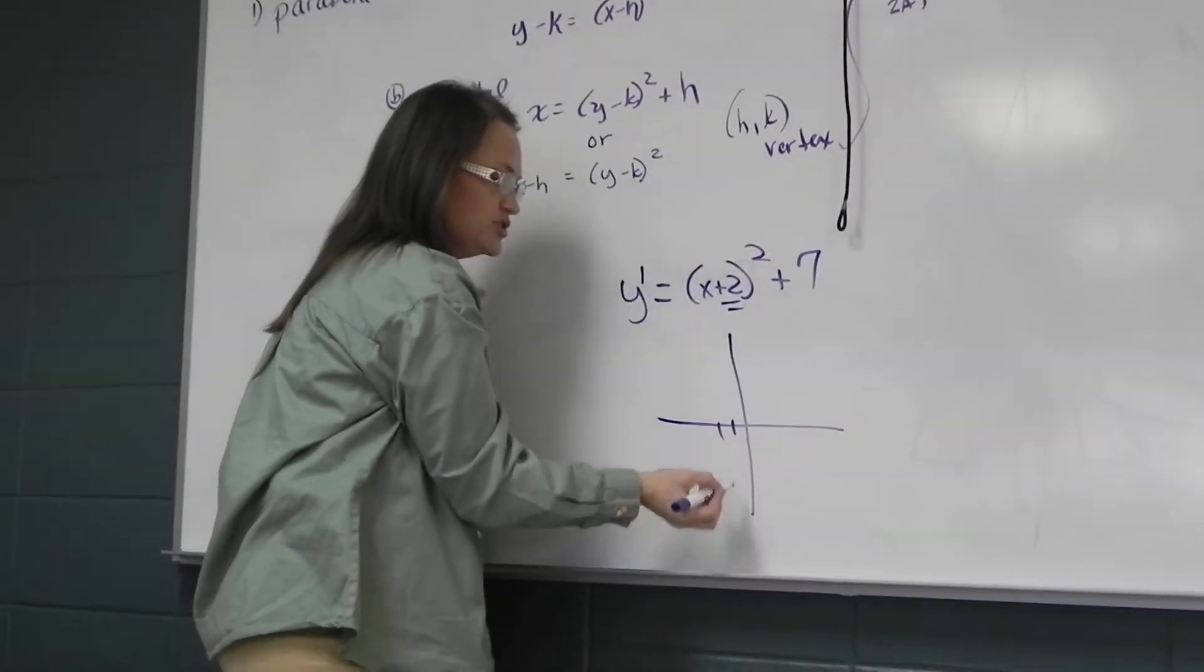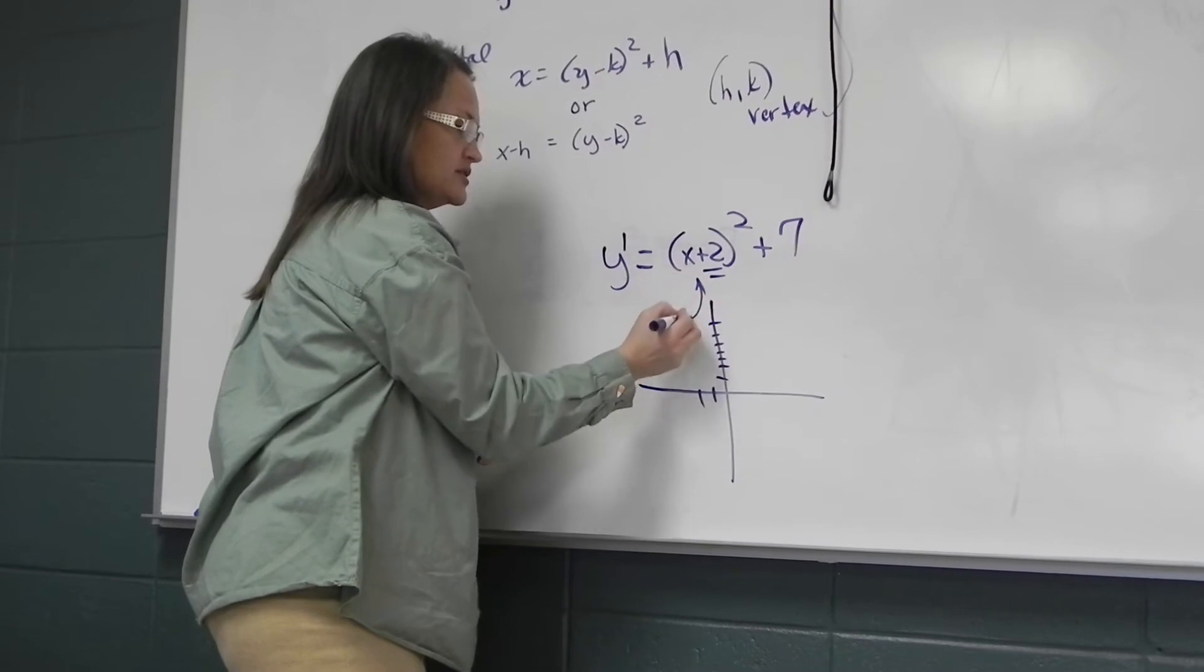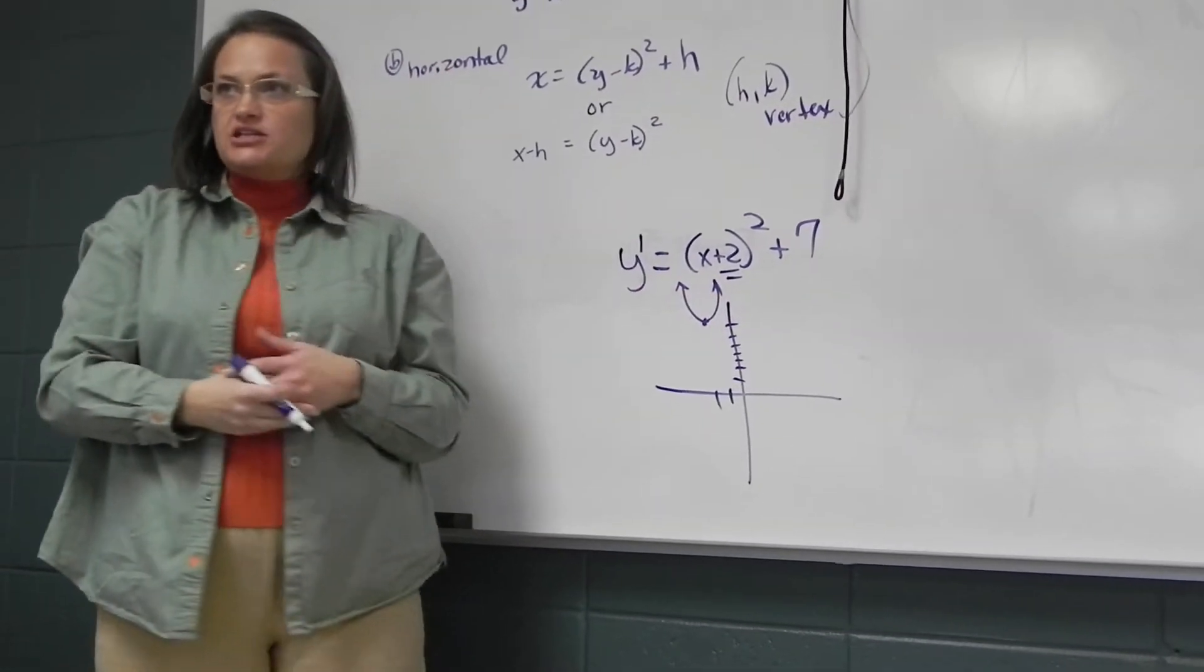Shift it back 2 and up 7. It's positive in front, so it's upright. That would be a sketch of that parabola.